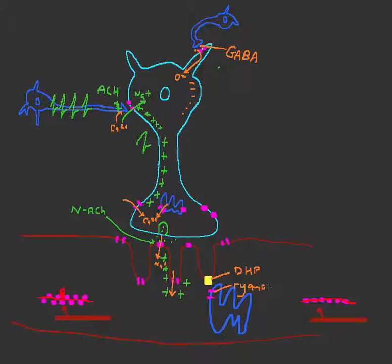on a nearby sarcoplasmic reticulum, which is just a smooth endoplasmic reticulum for muscle. So, this DHP voltage sensor signals the ryanodine receptor, and this will release calcium, lots of calcium, into the muscle.